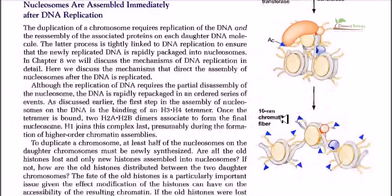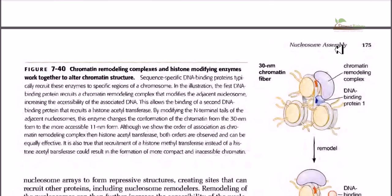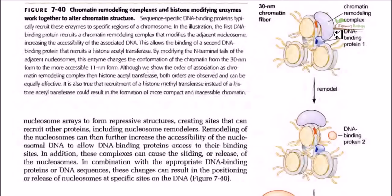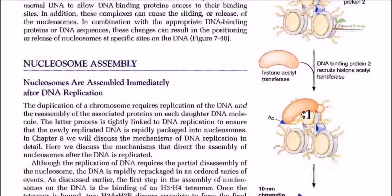Before this step can occur, we need the activity of DNA binding protein 2 and DNA binding protein 1. Without the activity of these DNA binding proteins, histone acetyltransferase cannot establish its work. This is not a single-stage process — it is a multiple-step process which is tightly controlled. In biology, we always have multiple-step procedures, and you should keep this in mind.